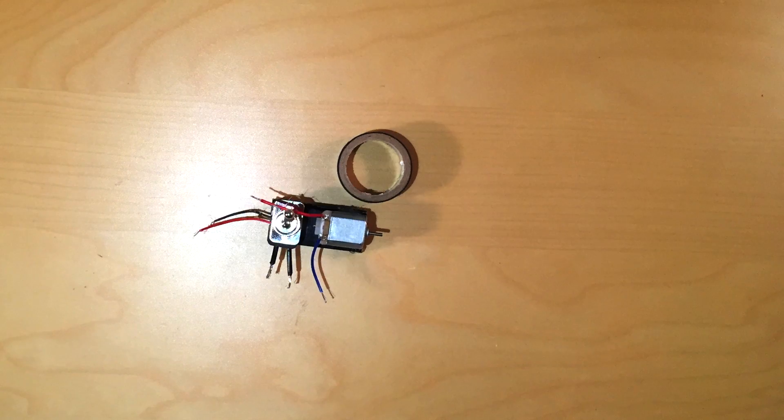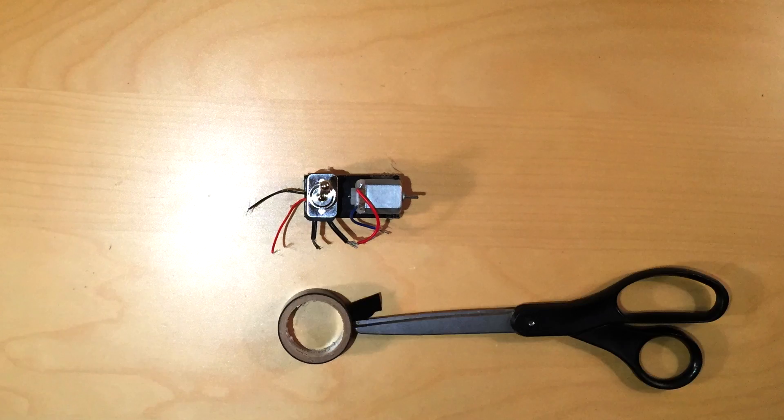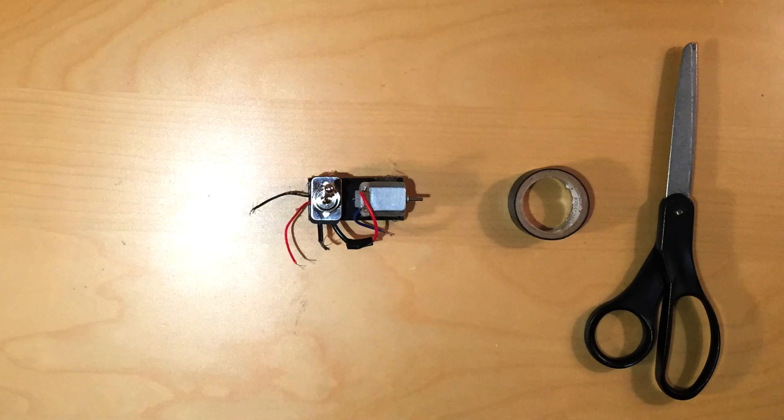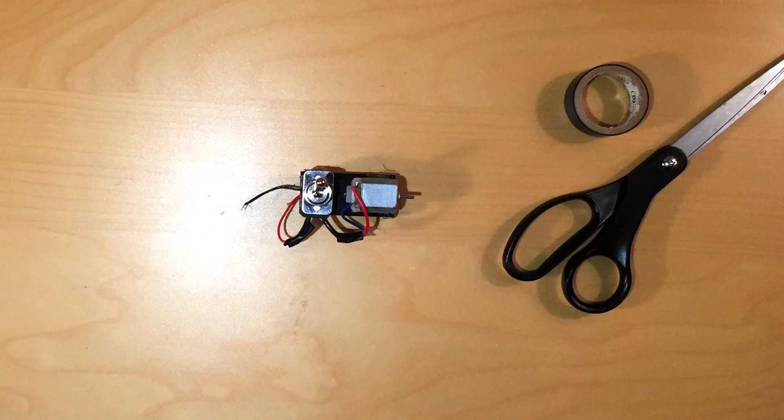After that, take the positive motor wire and a lead from the switch and twist them together. Once they are tightly intertwined, wrap them in a piece of electrical tape. Repeat this for the other switch lead and the positive wire from the battery.